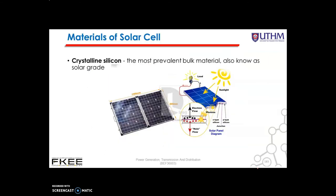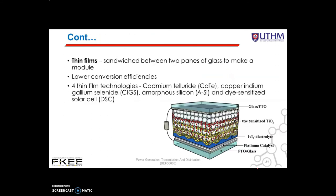Regarding materials of the solar cell: the first is crystalline silicon, the most prevalent bulk material, also known as the solar grade. The second is thin films, sandwiched between two panes of glass to make a module, but these types of solar cells have lower conversion efficiencies. There are four thin-film technologies: cadmium telluride, copper indium gallium selenide, amorphous silicon, and dye-sensitized solar cells.